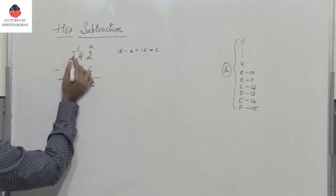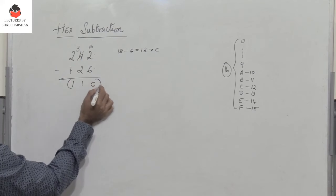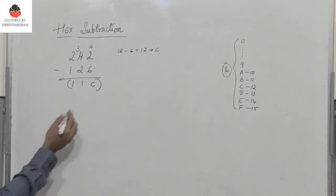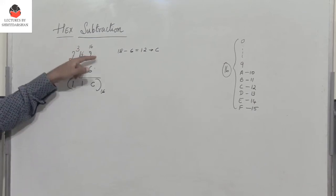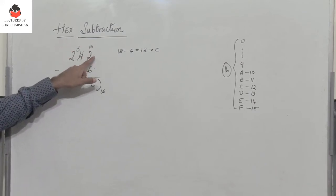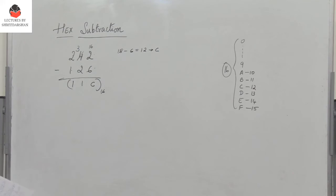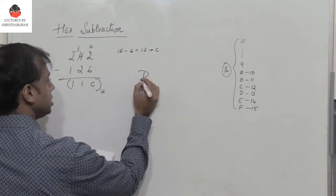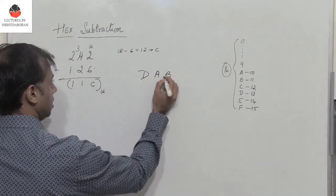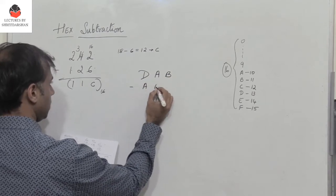3 minus 2 is 1. 2 minus 1 is 1. So the answer is 11C in hex representation. It's that simple. When you take a borrow, you have to add 16 to the given number in hex subtraction. Let's take another example: DAB minus AEF.